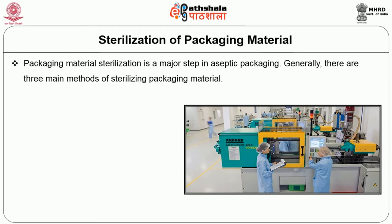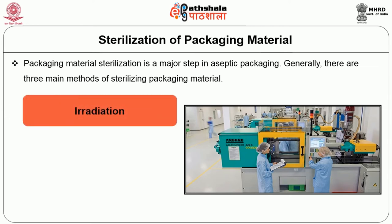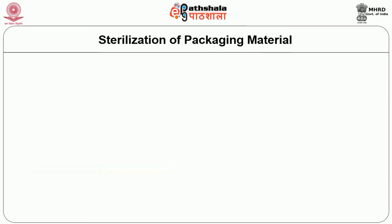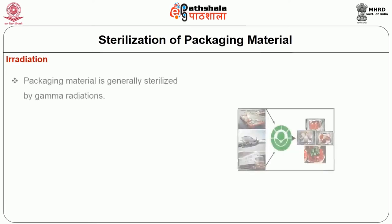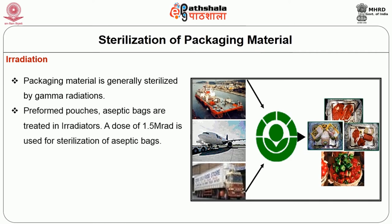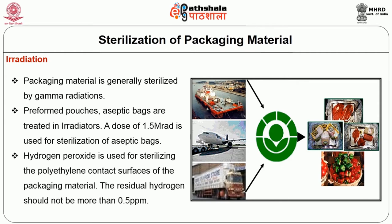Generally, there are three main methods of sterilizing packaging materials: irradiation, heat, and chemical treatments. The first method is irradiation. Packaging material is generally sterilized by gamma radiations. Preformed pouches and aseptic bags are treated in irradiators. A dose of 1.5 mega rad is used for sterilization of aseptic bags. Hydrogen peroxide is used for sterilizing the polyethylene contact surfaces of the packaging material. The residual hydrogen peroxide should not be more than 0.5 ppm.